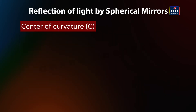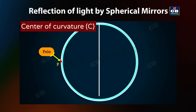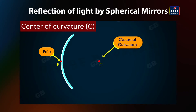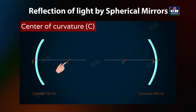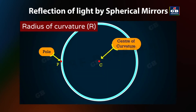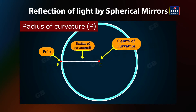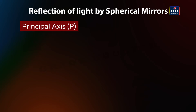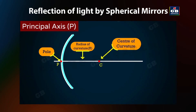The center of curvature is the center of the imaginary sphere from which the spherical mirror is derived. It lies behind the mirror in the case of a convex mirror, and in front of the reflecting surface in the case of a concave mirror. It is represented by the letter C. The radius of curvature R is the radius of the imaginary sphere of which the mirror is a part. The line joining the pole and the center of curvature is called the principal axis.